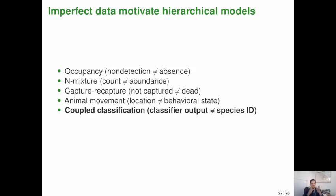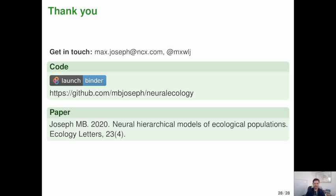And so I mentioned earlier that imperfect data often motivate hierarchical models. And this is just another example, right? The output from a classifier is imperfect data in the sense that the classifier output might not always be exactly the same as the true species identity. And so this class of models is referred to, this is borrowing a term from Andy Royal as a coupled classification model. And I think it represents a really sort of intriguing and important area for quantitative ecology to be pointing towards.